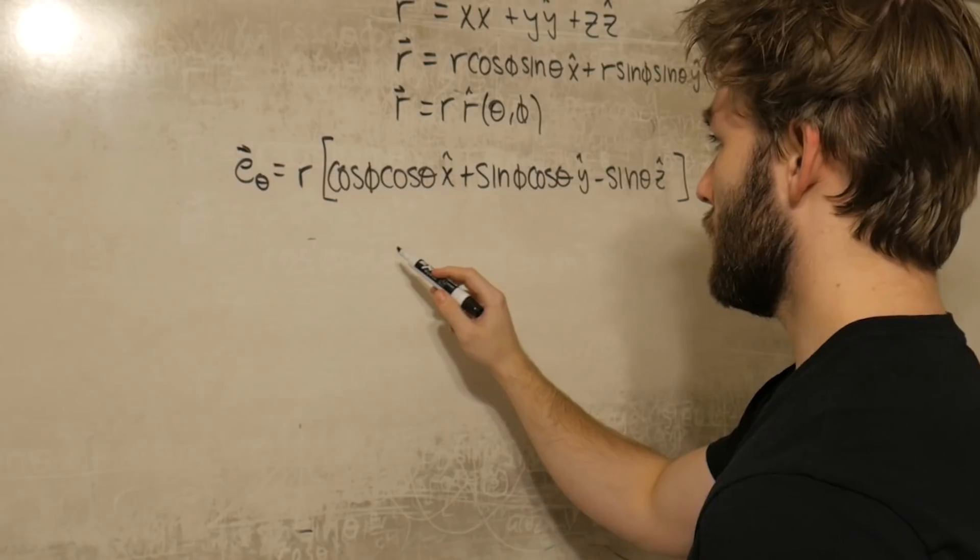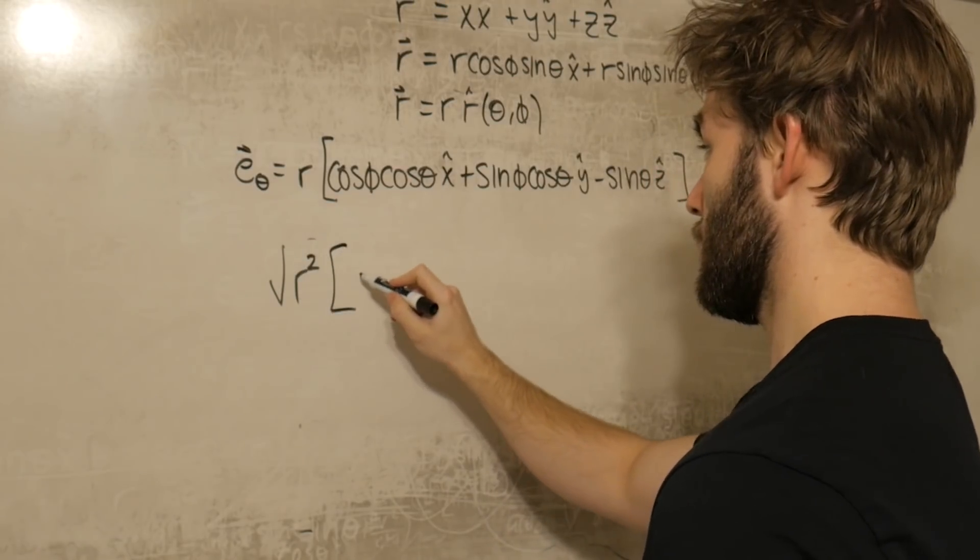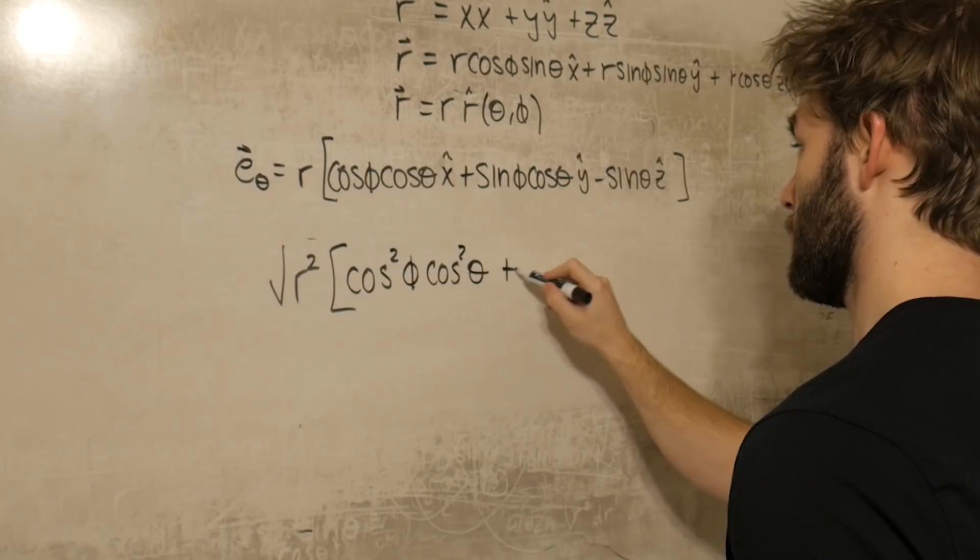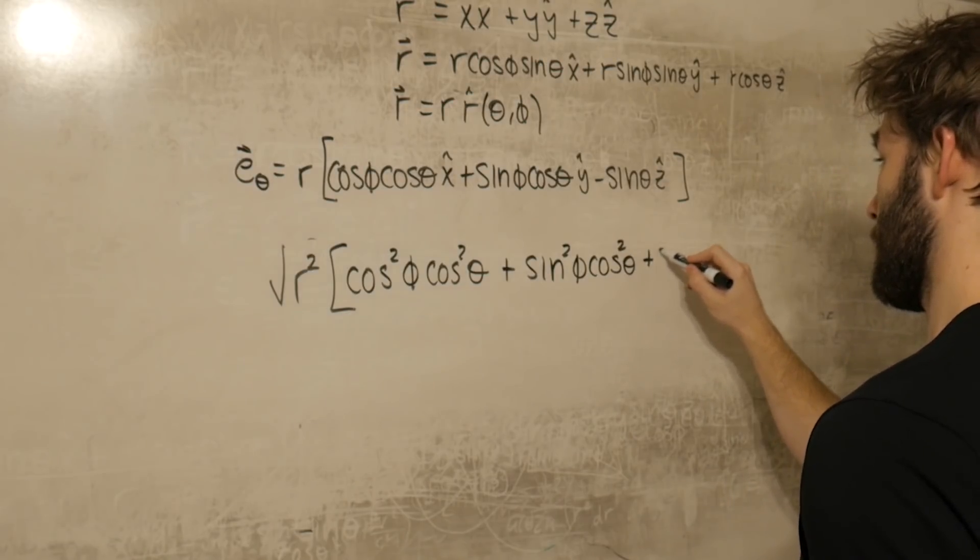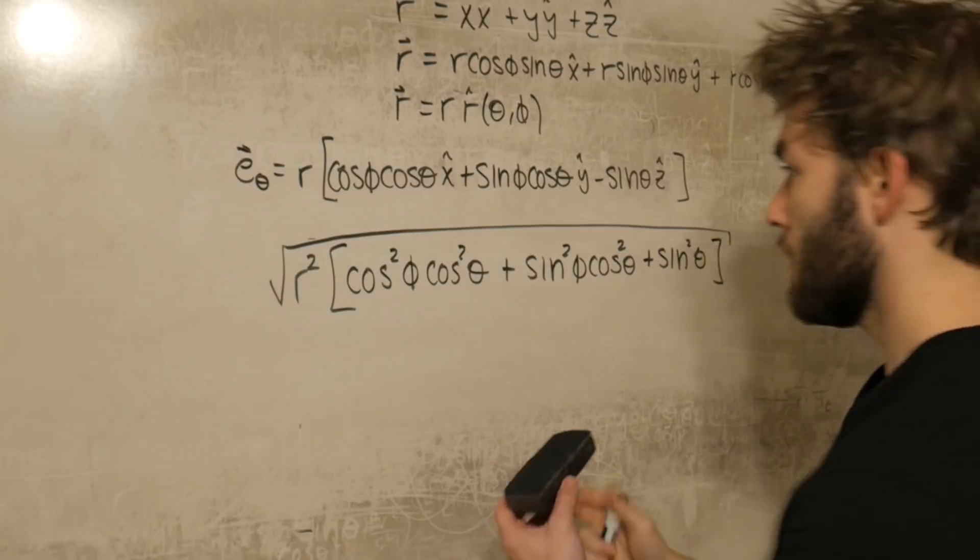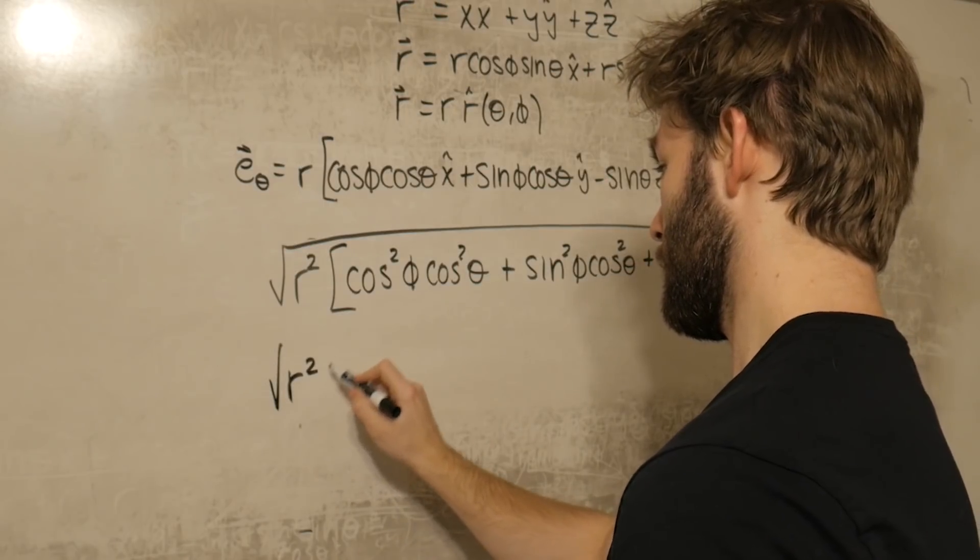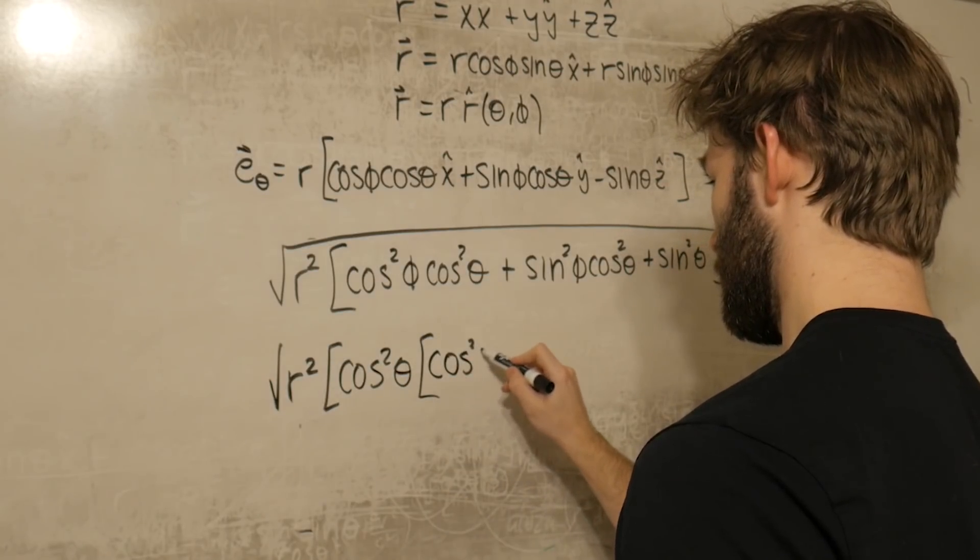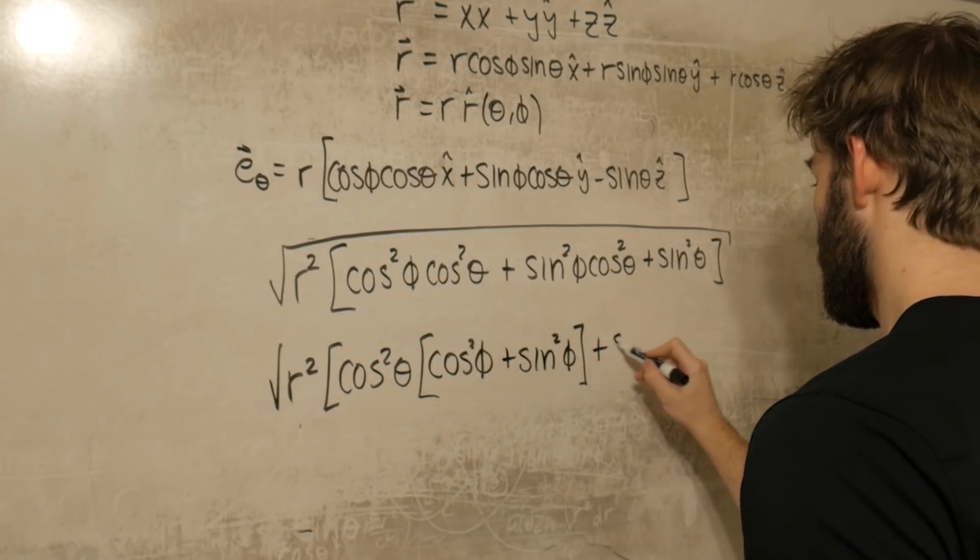So the magnitude of this is just going to be the square root of r squared times all of this stuff. And the beautiful thing about this is that we get a lot of cancellations. So right off the bat, we can factor out a cosine squared theta, and we get that this is equal to cosine squared phi plus sine squared phi, that should look like something to you, plus sine squared theta.